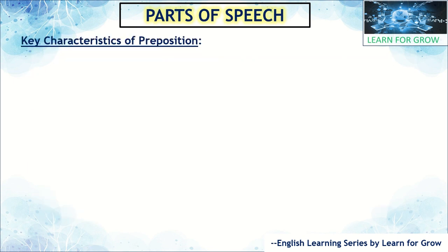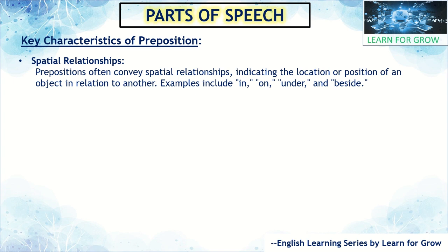The next key characteristic is spatial relationship. Prepositions often convey spatial relationships, indicating the location or position of an object in relation to another. Examples include: in, on, under, beside — these prepositions show location. Like that, we can use spatial relation with prepositions.